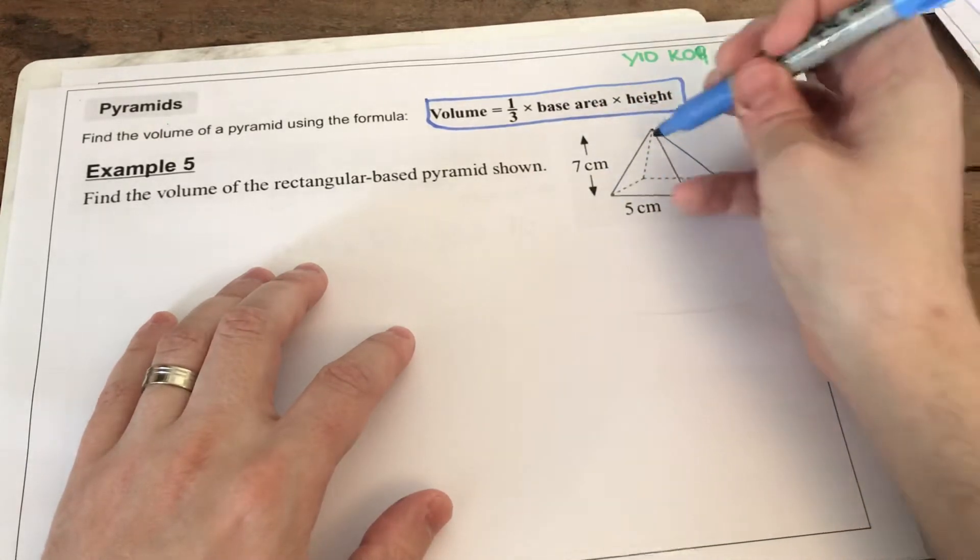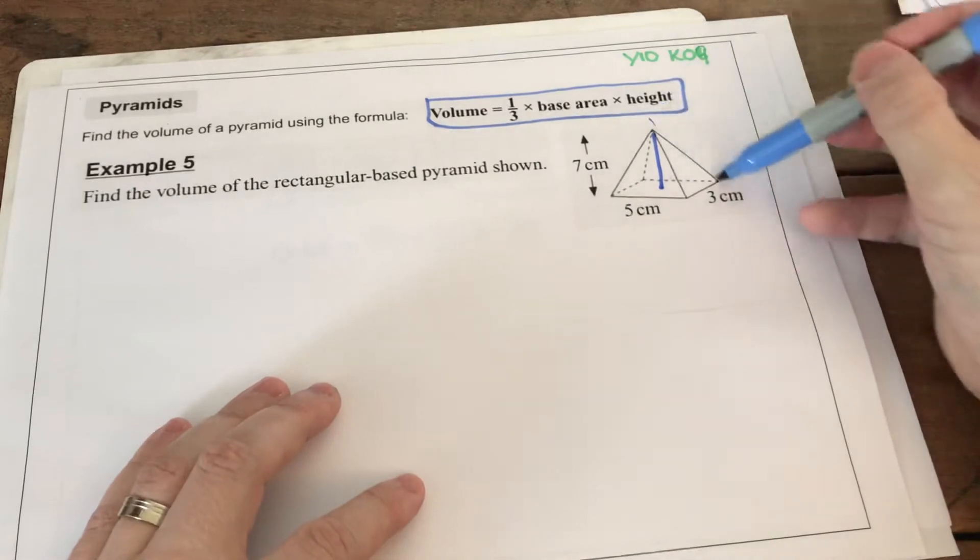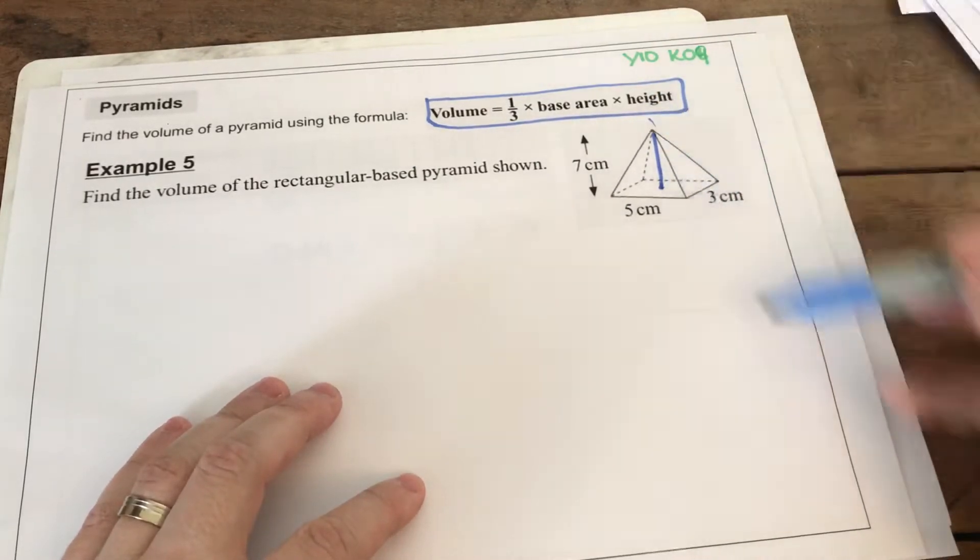The thing to notice is that the height is from the center up to the top. It is not one of the slanted heights, it is from the center up to the top.